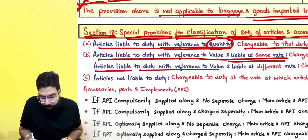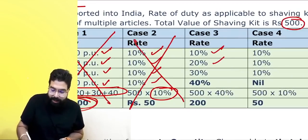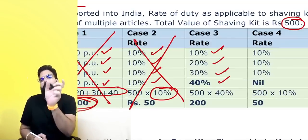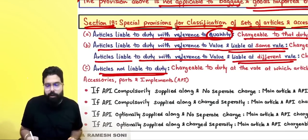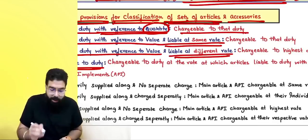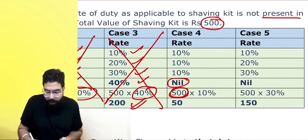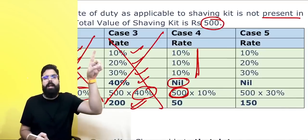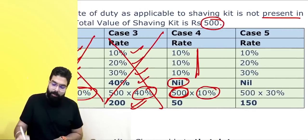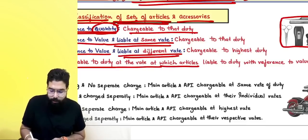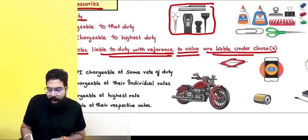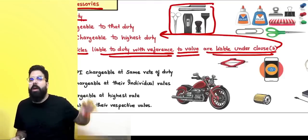If articles are liable to duty with reference to value but at different rates, apply the highest rate on the total set value. If one item in the set is not liable to duty, still apply the rate applicable to the remaining items on the total value. If remaining items are at the same rate, apply that rate; if at different rates, apply the highest rate.